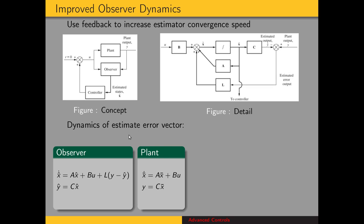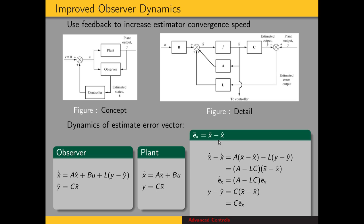We're going to look at the error between the true state and our estimated state to see the dynamics. We want that error vector to go to zero more rapidly than the plant itself changes. Here is the state space representation for the plant, and we're going to find the error as the difference between the two. The state equation for the error gives us A times the error minus L times the difference in the outputs. Using the output equation, this difference between outputs is C times the error vector, giving us A minus LC times that. So here's our error state equation using this notation for the error vector.